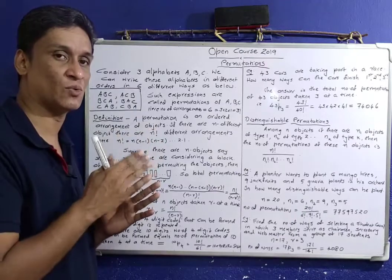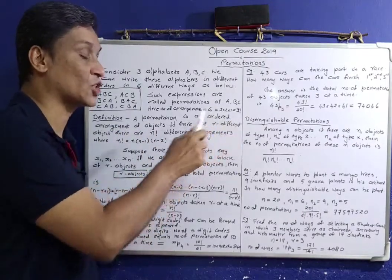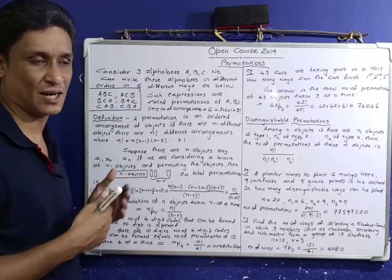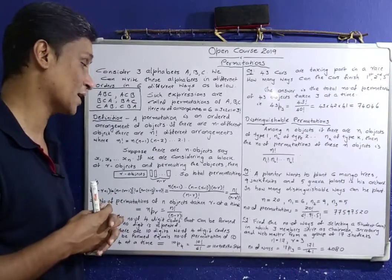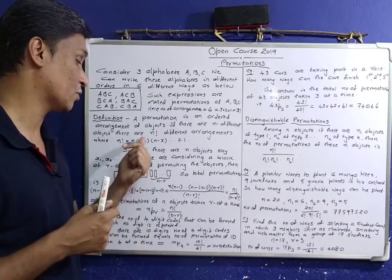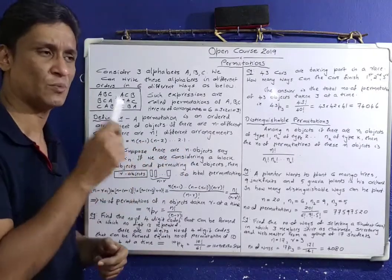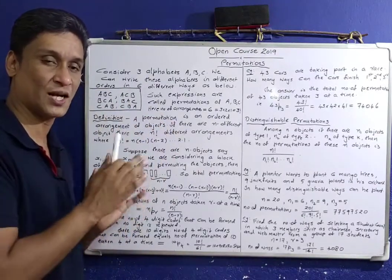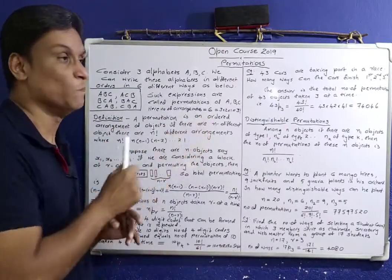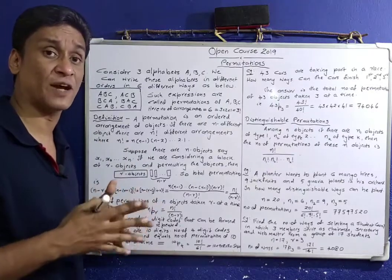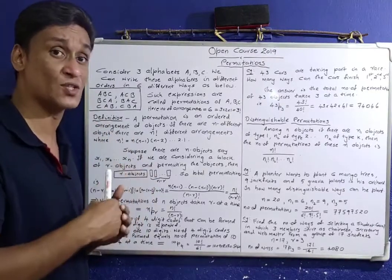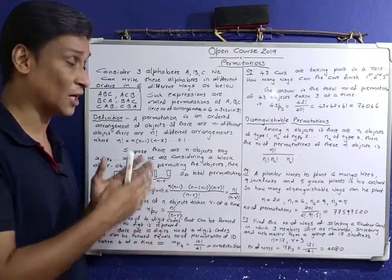This is what we call 3 factorial. In general, n factorial is n into n minus 1, and so on. So 3 factorial is 3 into 2 into 1 equals 6. A permutation is an ordered arrangement of objects. If there are n different objects, there are n factorial different arrangements possible, where n factorial equals n into n minus 1 into n minus 2 ... into 2 into 1.